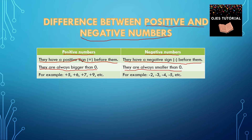So, positive numbers are bigger than 0 — for example, plus 5, plus 6, plus 7, plus 9, etc. And negative numbers are smaller than 0 — for example, minus 2, minus 3, minus 4, minus 5, etc.